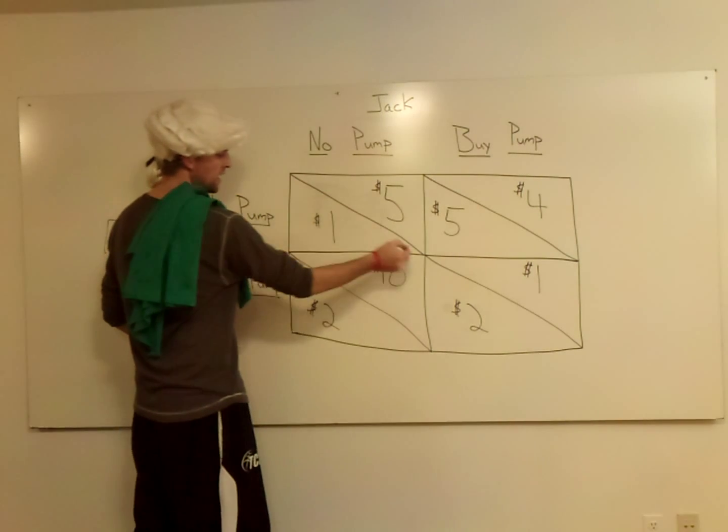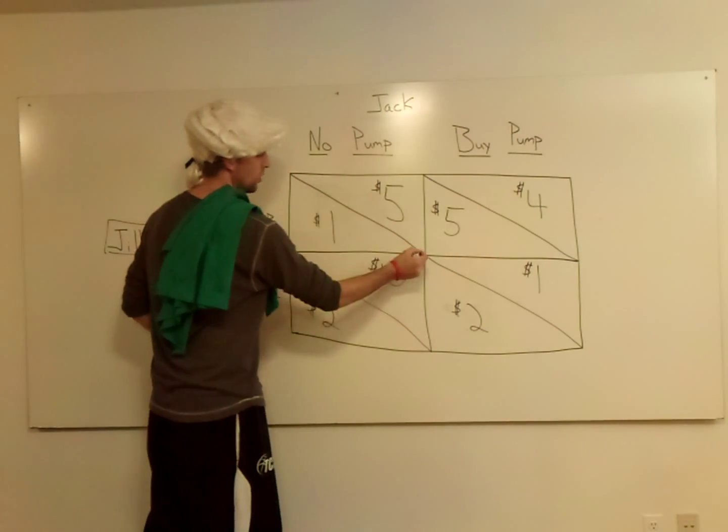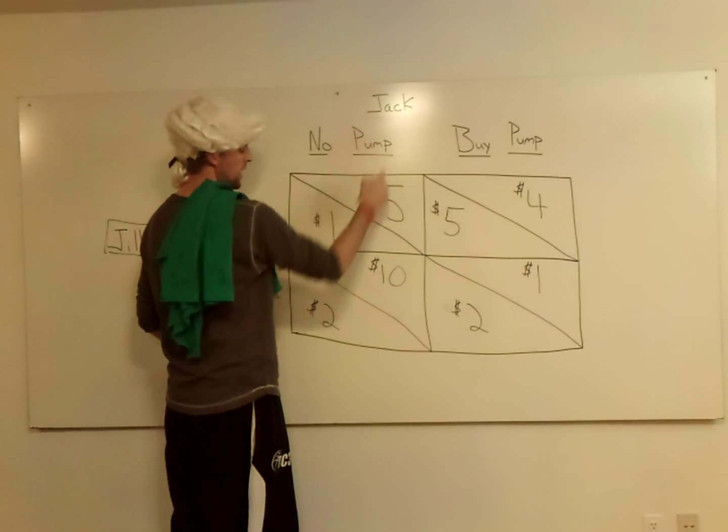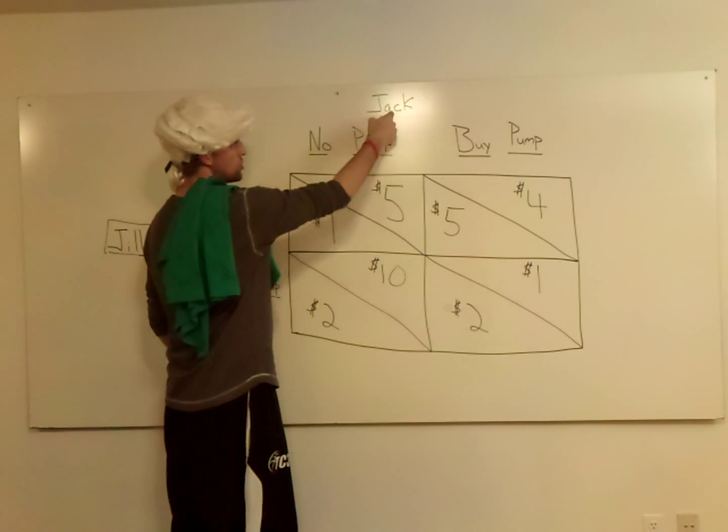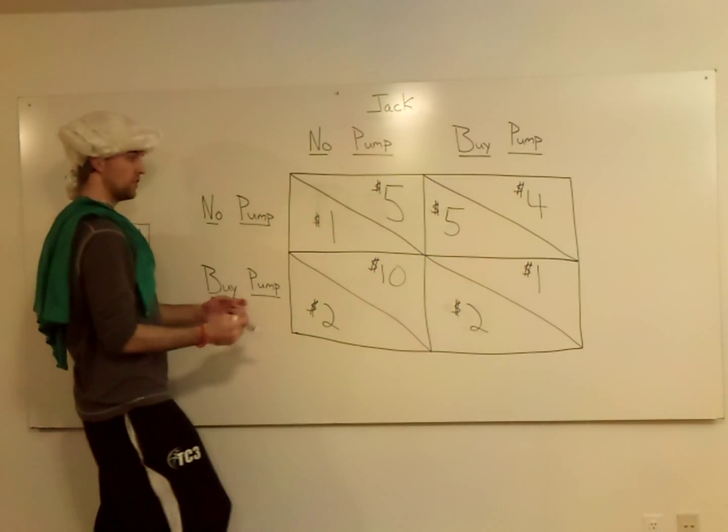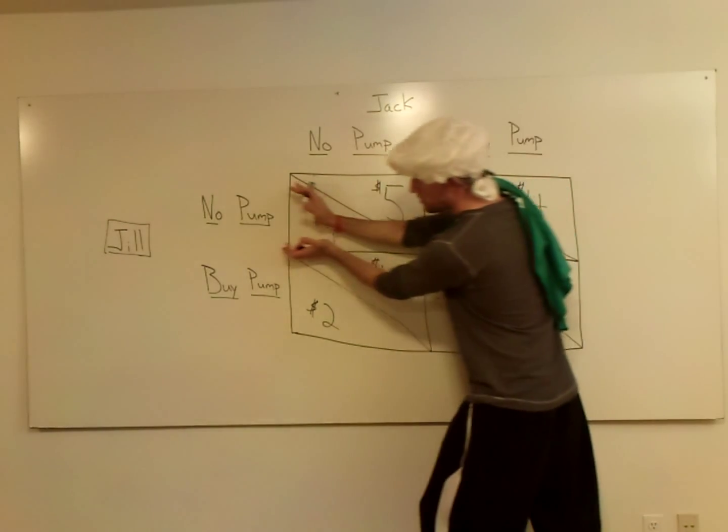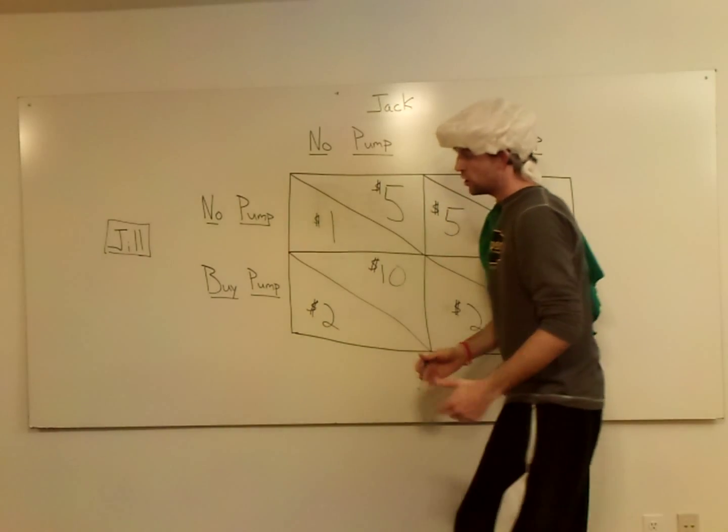So the triangle here on top opens up and faces Jack. So these numbers on the top of the boxes are going to go to Jack. If you look here, this triangle on the bottom opens up and faces towards Jill. That's going to be Jill.